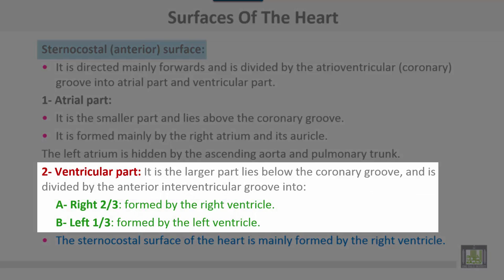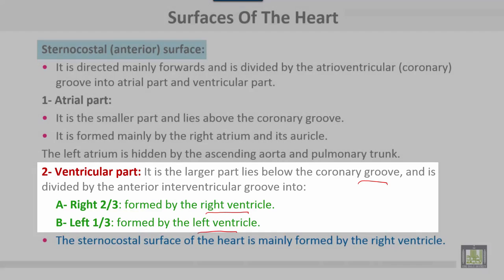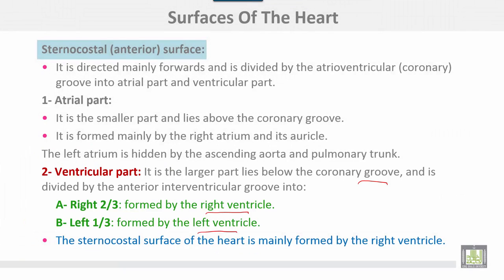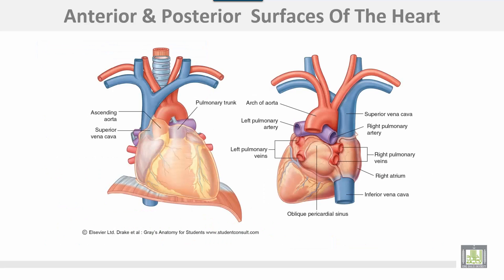The ventricular part is the larger part, lies below the coronary groove, and is divided by the anterior interventricular groove into right two-thirds formed by the right ventricle and left one-third by the left ventricle. The sternocostal surface of the heart is mainly formed by the right ventricle.